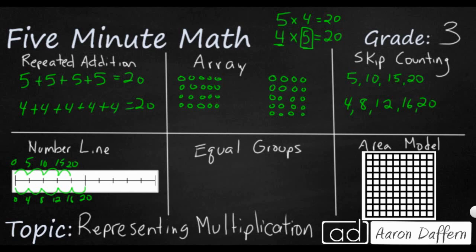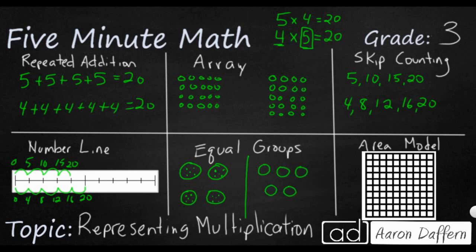Equal groups is kind of like an array, but really what we're looking at is if I wanted to draw four circles, I've got four groups. How much is in each group? This is where you draw your little dots to represent how much is inside each one. I like to make my fives look like they are on the dice when I'm playing Monopoly — so I've got four groups of five. You can just count the dots. Or you can draw five groups and fill each with four dots.